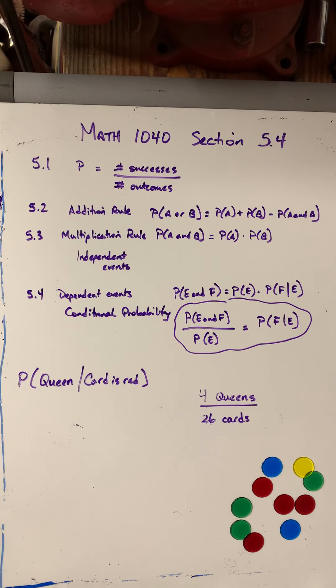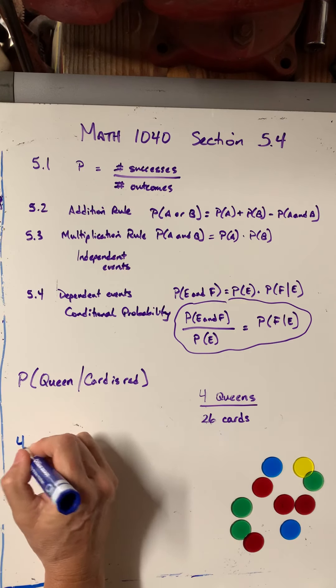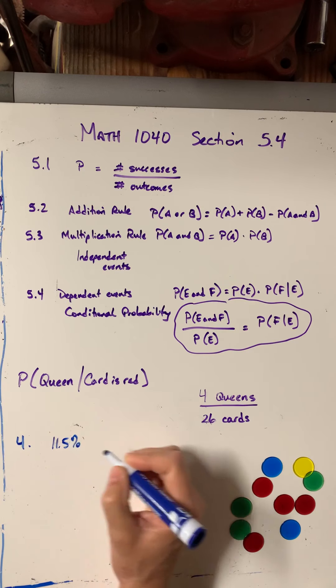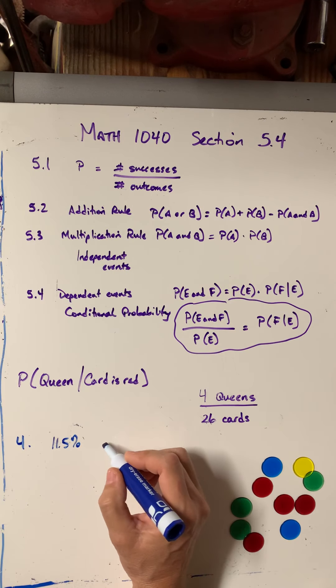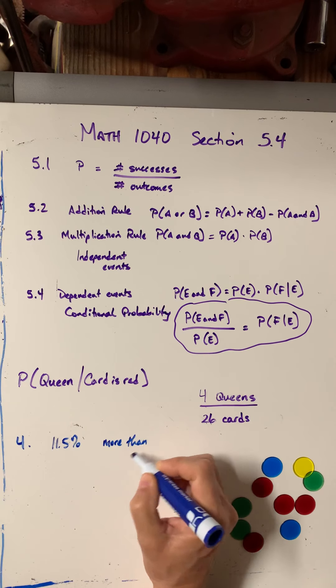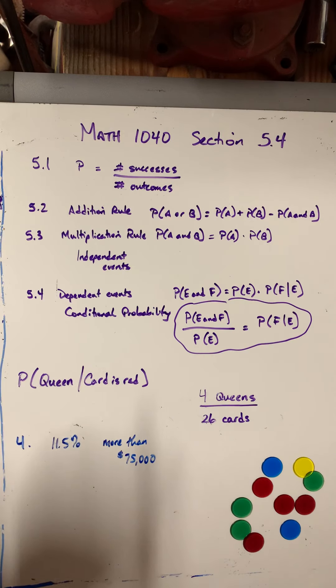So the last thing that I want to talk about is this concept of independence. So I'm going to look at question number 4 real quick. And question number 4 says, on mine, it says the probability that a randomly selected individual in a country earns more than $75,000 per year is 11.5%. So 11.5% that you earn more than $75,000 a year.